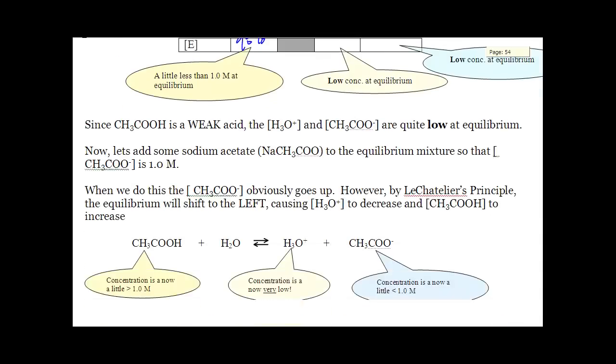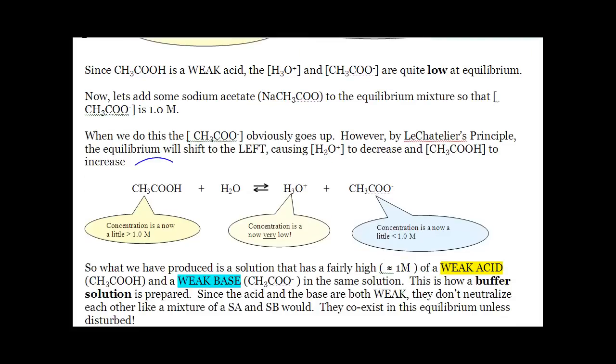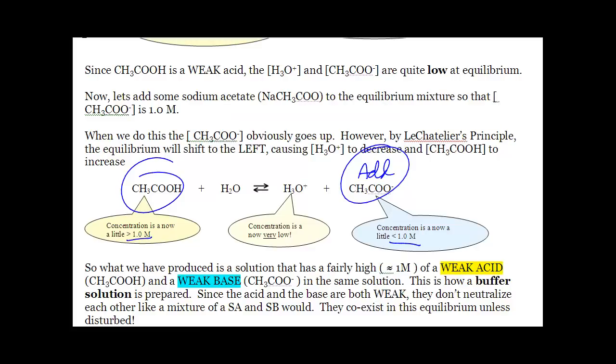So to make a buffer is very simple. You're going to start with a weak acid and then add its conjugate pair. You want to add enough conjugate pair until the concentrations are about the same. A new equilibrium is going to be formed in which the weak acid and its conjugate base are approximately the same, so it has the ability to shift left and shift right equally, counteracting any change.